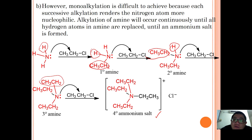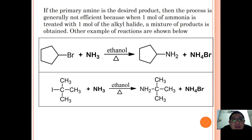It is very hard to control the formation of different amine classes, especially when you have excess haloalkane, and eventually the end product is a quaternary ammonium salt. If a primary amine is the desired product, this process is generally not efficient, because when one mole of ammonia is treated with one mole of alkyl halide, a mixture of products is obtained.